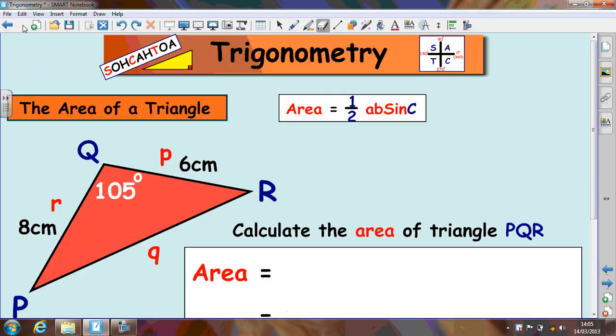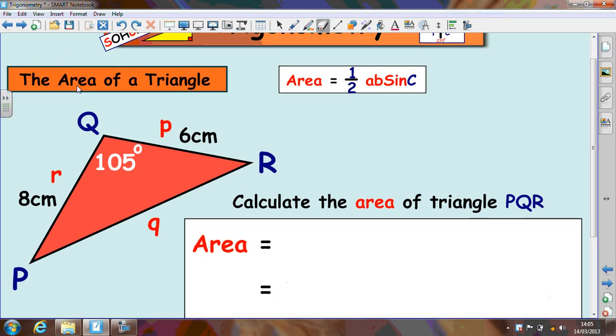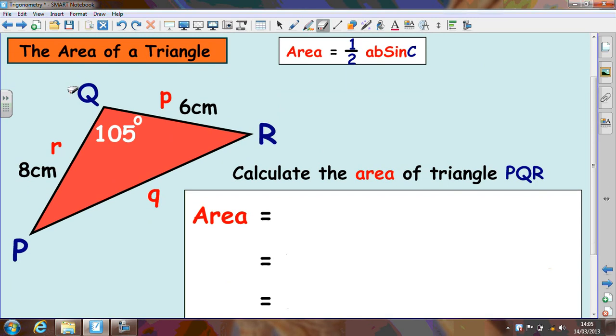Let's have a look at what that would look like when you have numbers to deal with. The first thing to do in this calculation is look at the formula sheet and change the formula to the letters that we are dealing with here. We've got Q, so it will be sine of Q at the end because Q is the angle. And the surrounding sides are P and R. So it's a half PR sine Q.